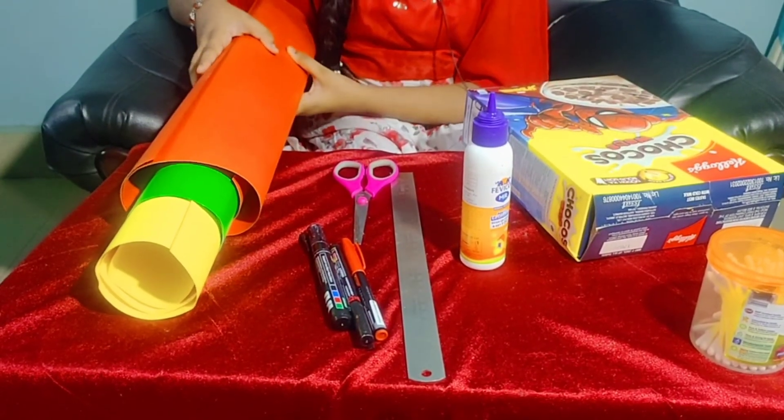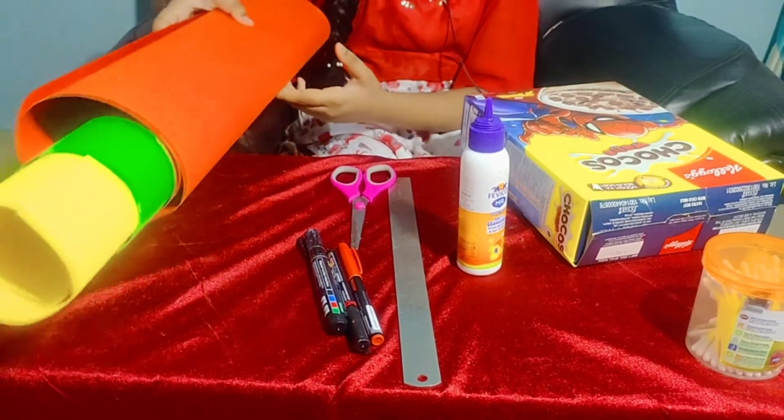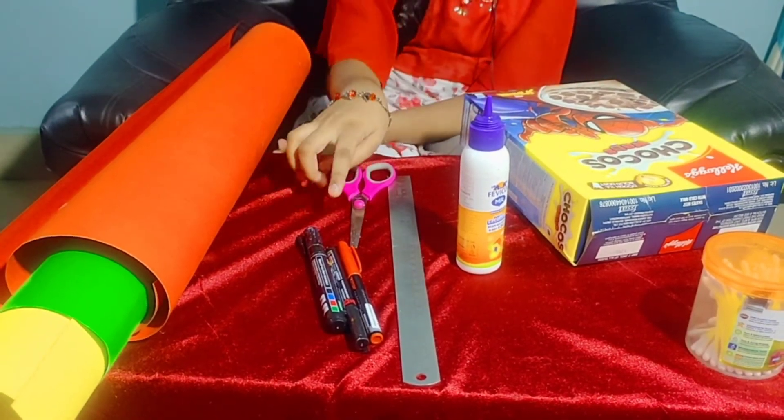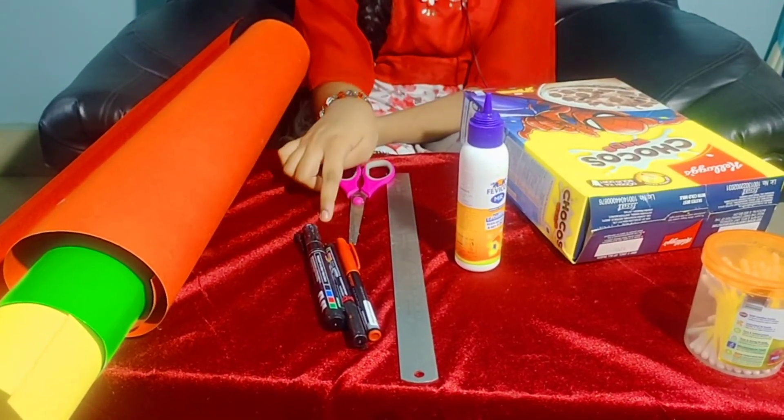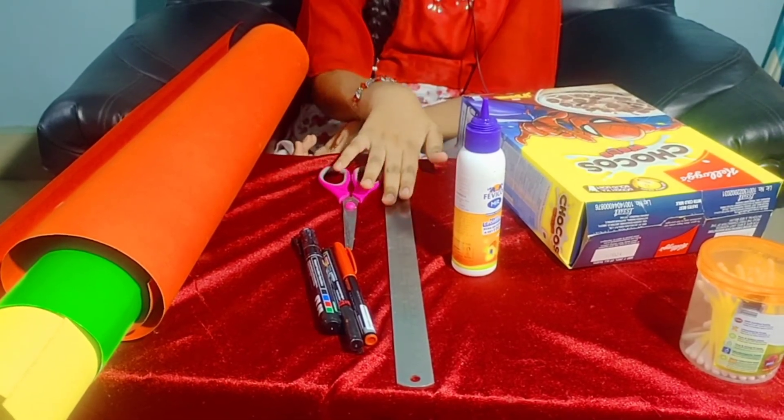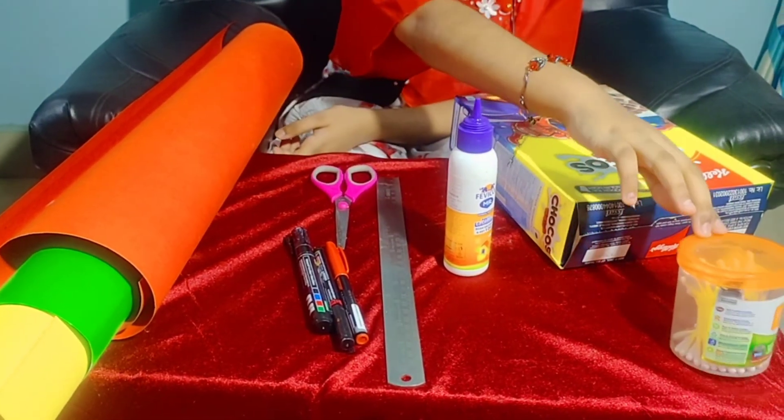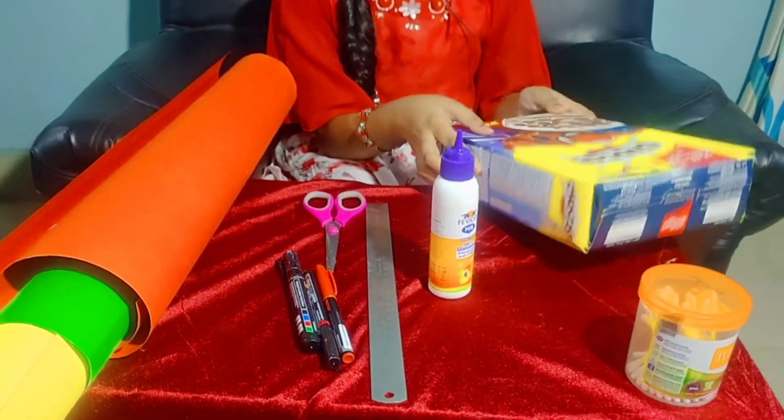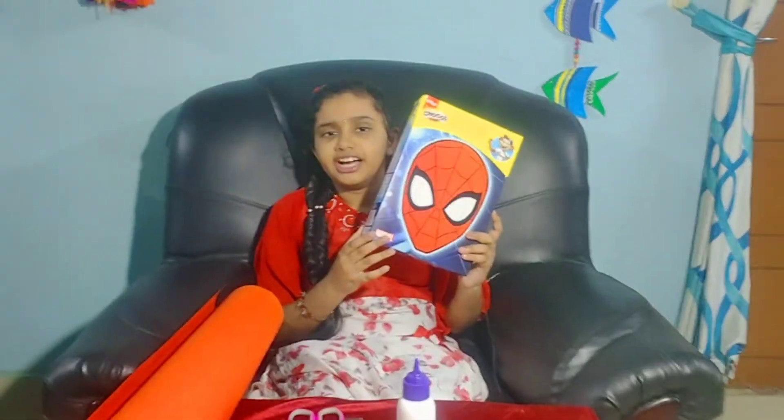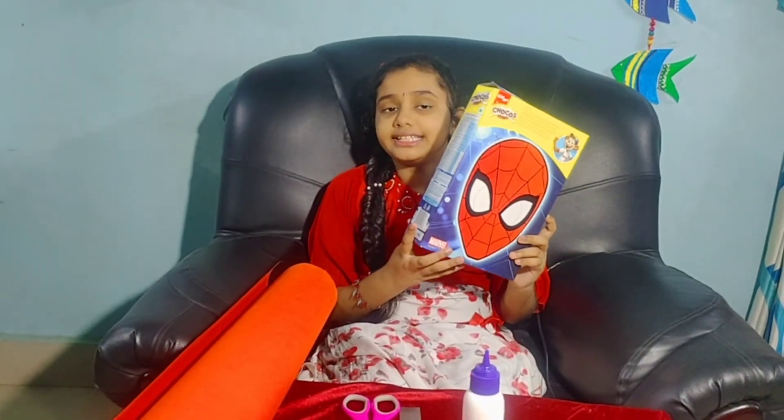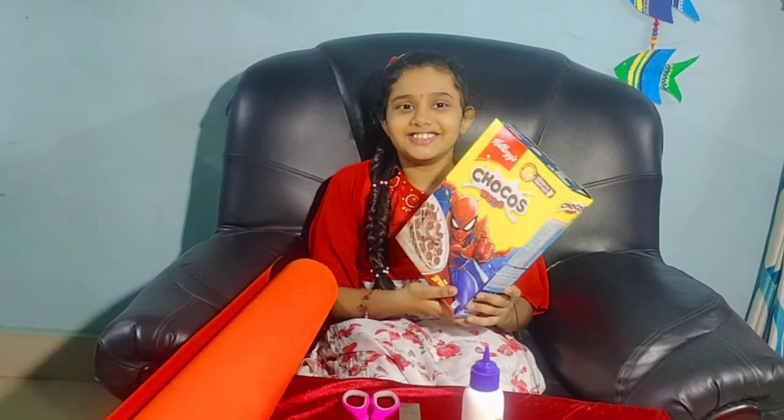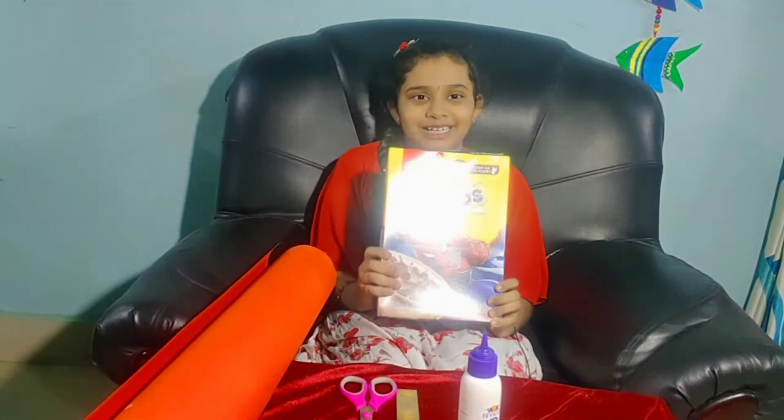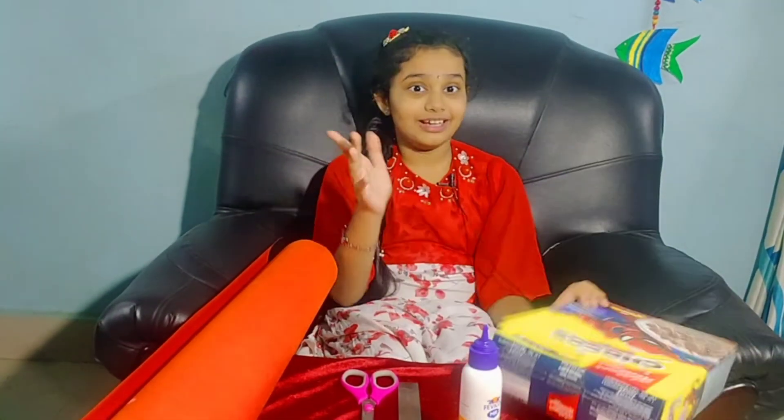For the working model of Indian and international system of numeration, we need paper of 3 different colors, 3 different types of marker pen, scissor, scale, glue, earbuds and one carton. I have taken the carton of chocos. I love chocos very much. Now let's start the video.